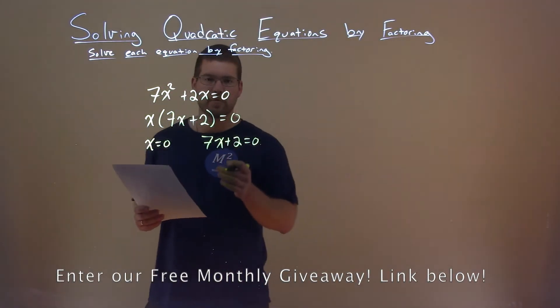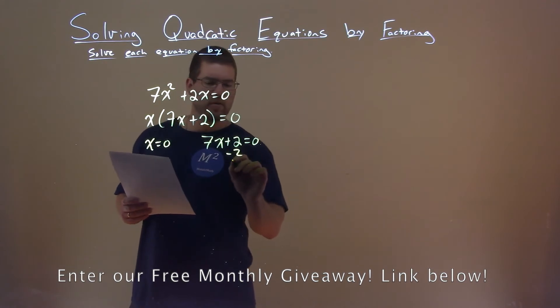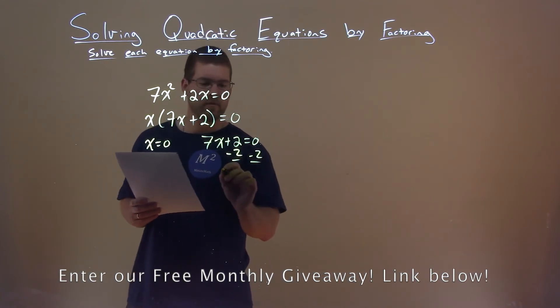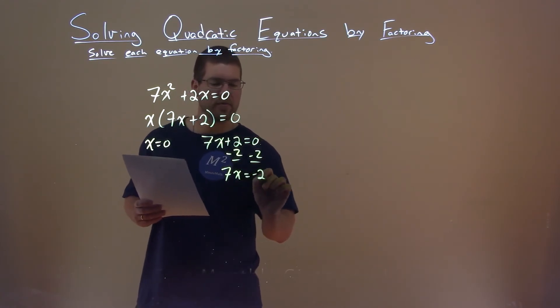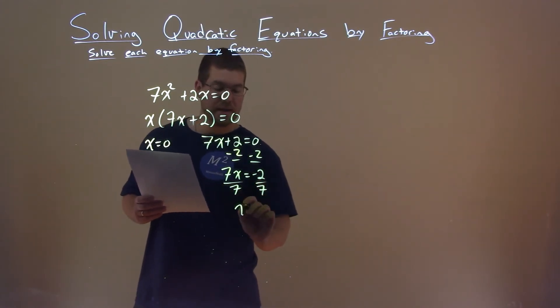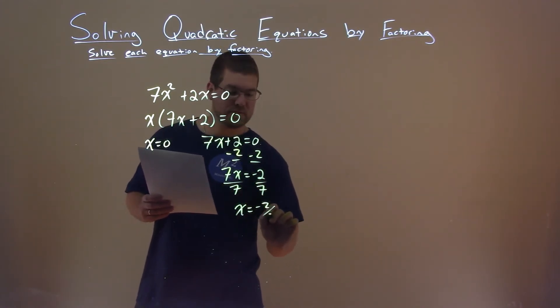And now, we want to solve for x. Subtract the 2 to both sides here. We're left with 7x equals negative 2. Divide both sides by 7. And x equals negative 2 sevenths.